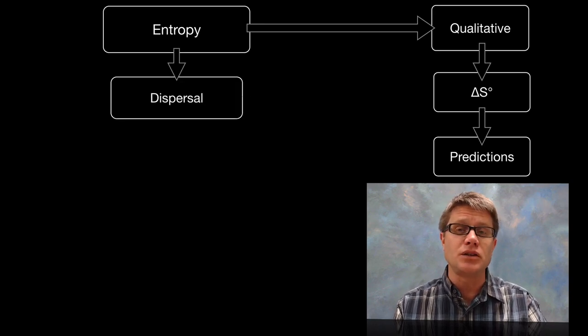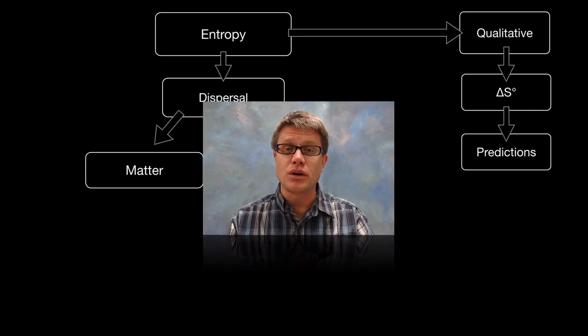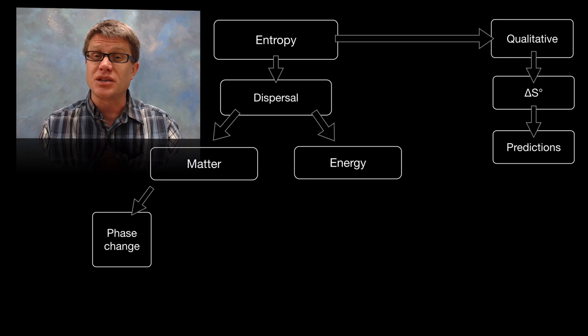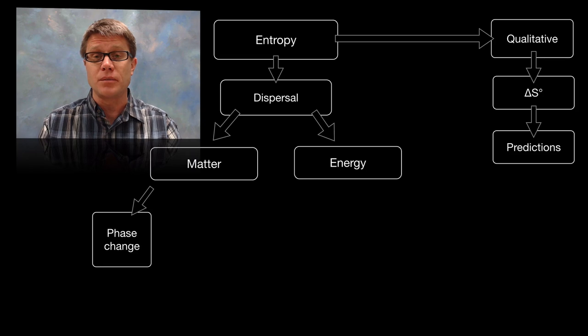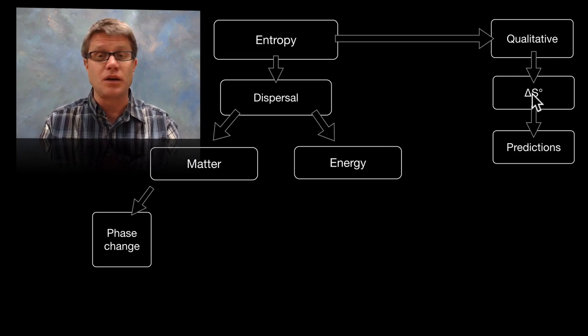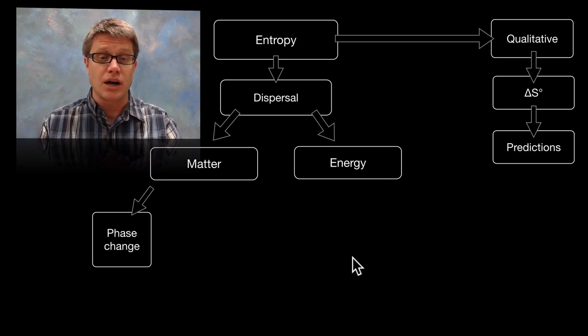And so if we define it, it's simply dispersal. Dispersal of matter and dispersal of energy. So what are some examples of that? Let's say we were to make some phase changes. We were to go from a solid to a liquid to a gas. What would we be doing? We'd be dispersing or moving that matter away from its center point. And so we'd be increasing the entropy. In other words our delta S would be a positive value. We'd make that matter dispersed over time.